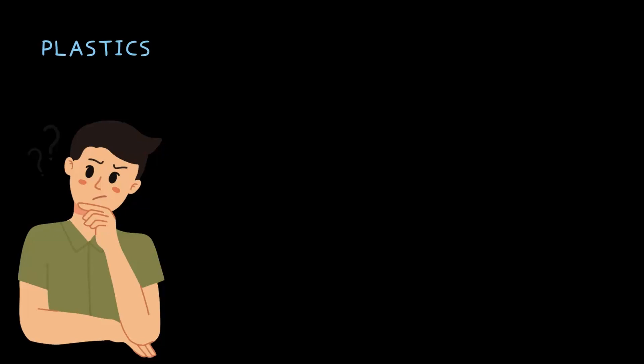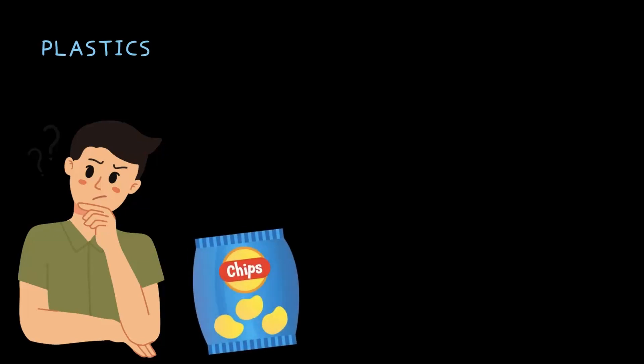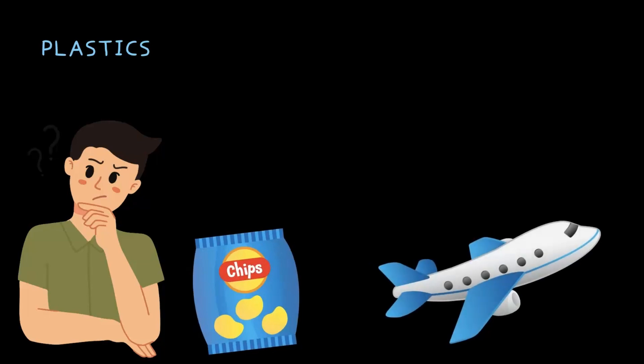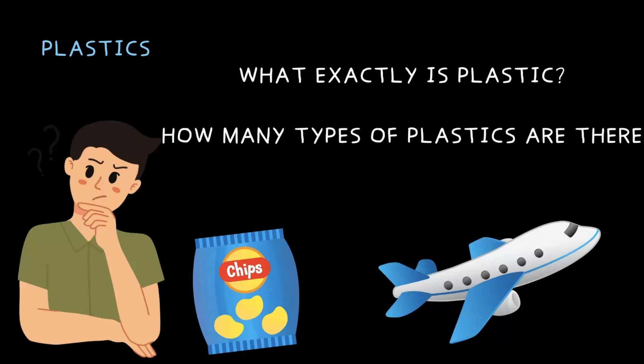Because we use plastics everywhere. Plastic has become such an important part of our life. From food packaging to parts of aeroplanes, plastic is everywhere. But have you ever stopped and thought about what exactly is plastic? How many types of plastics are there? And most importantly, is plastic good or bad? For the environment, for nature, for the earth, for us. Let us answer these questions in this video.